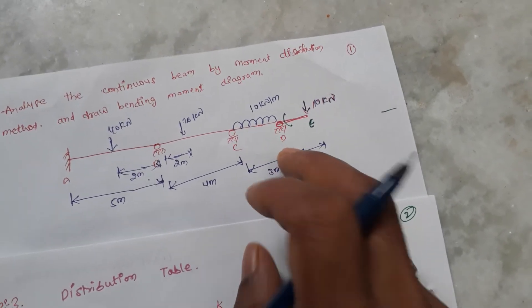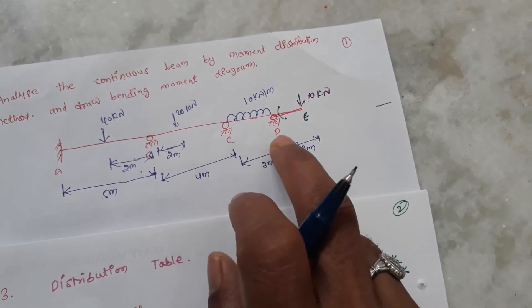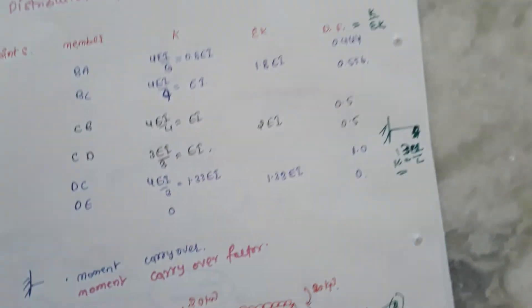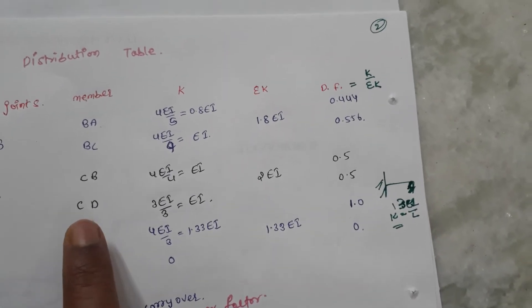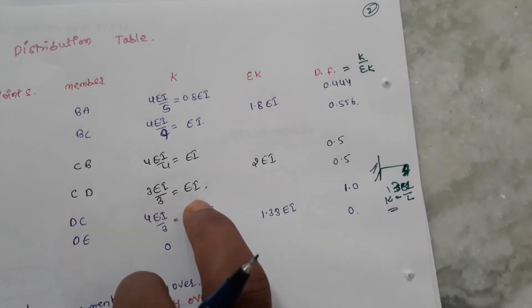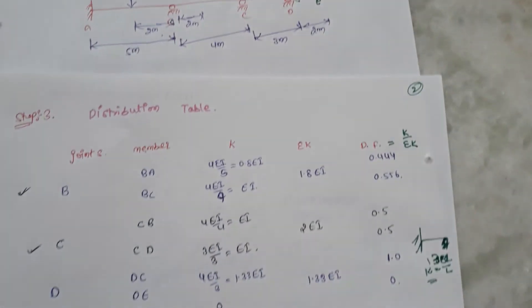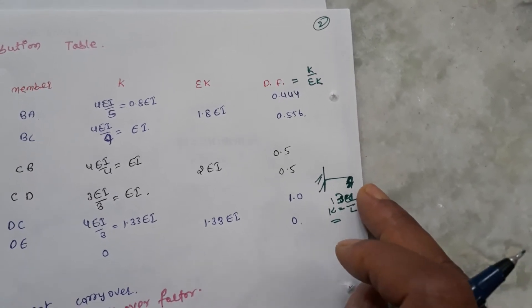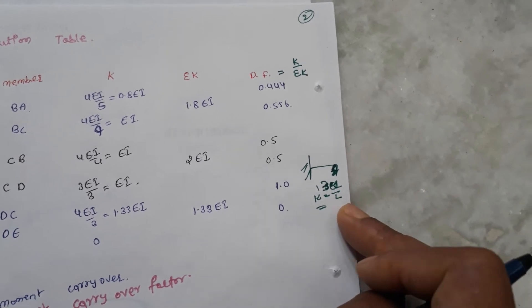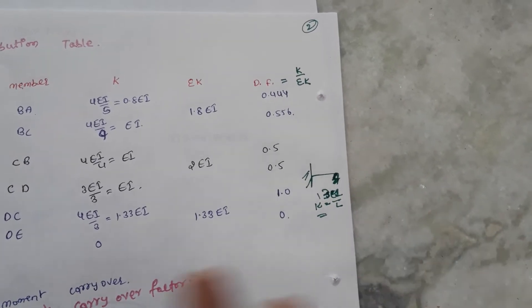For member C-to-D, since D has a roller support, we need to modify the stiffness factor. The modified stiffness becomes 3EI by l instead of 4EI by l. The rule is: when the far end is a pin or roller (hinged), use modified stiffness 3EI by l. When both ends are fixed, use 4EI by l.